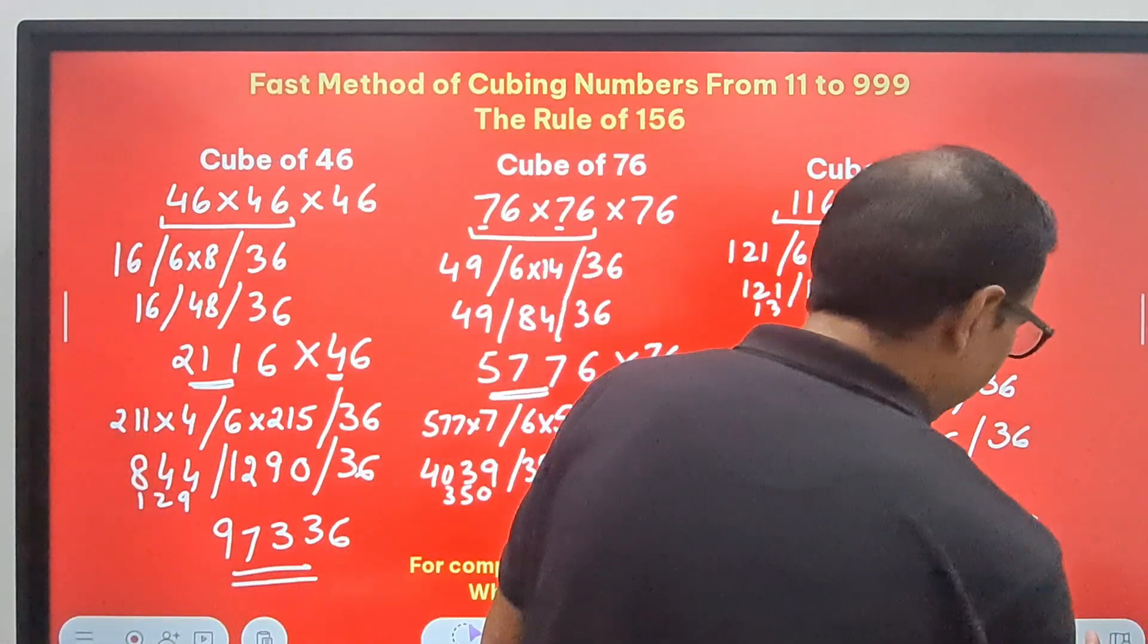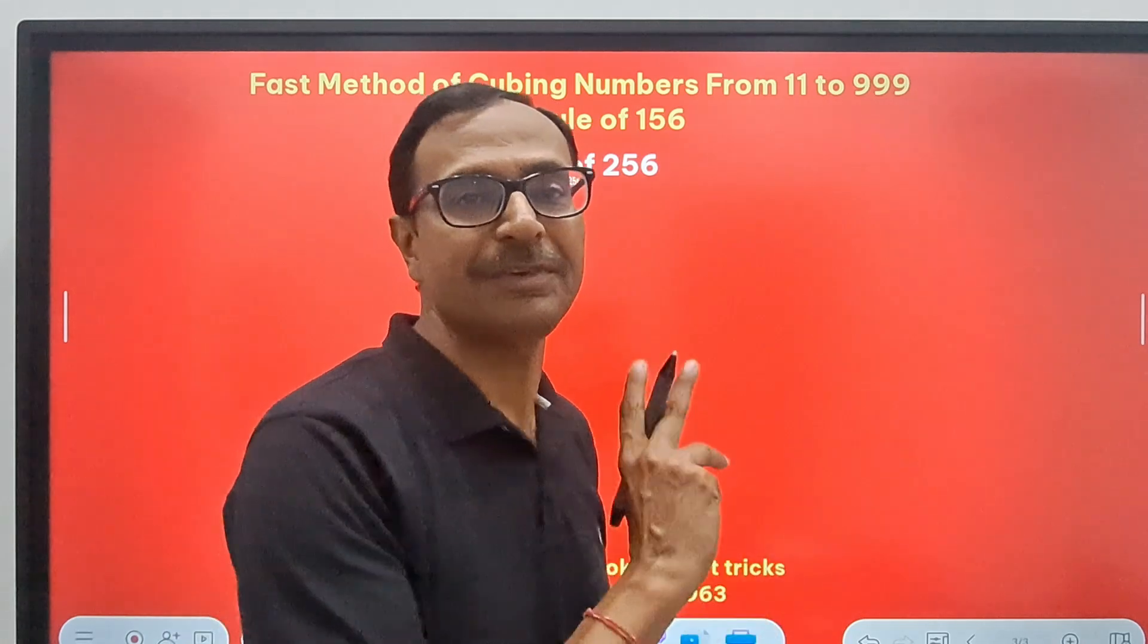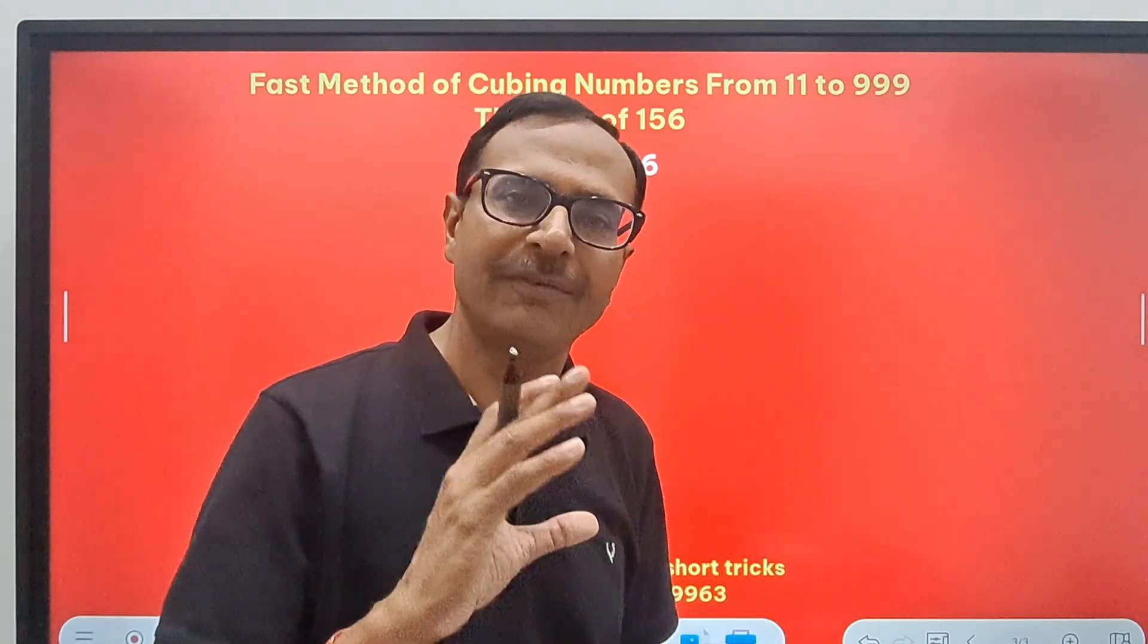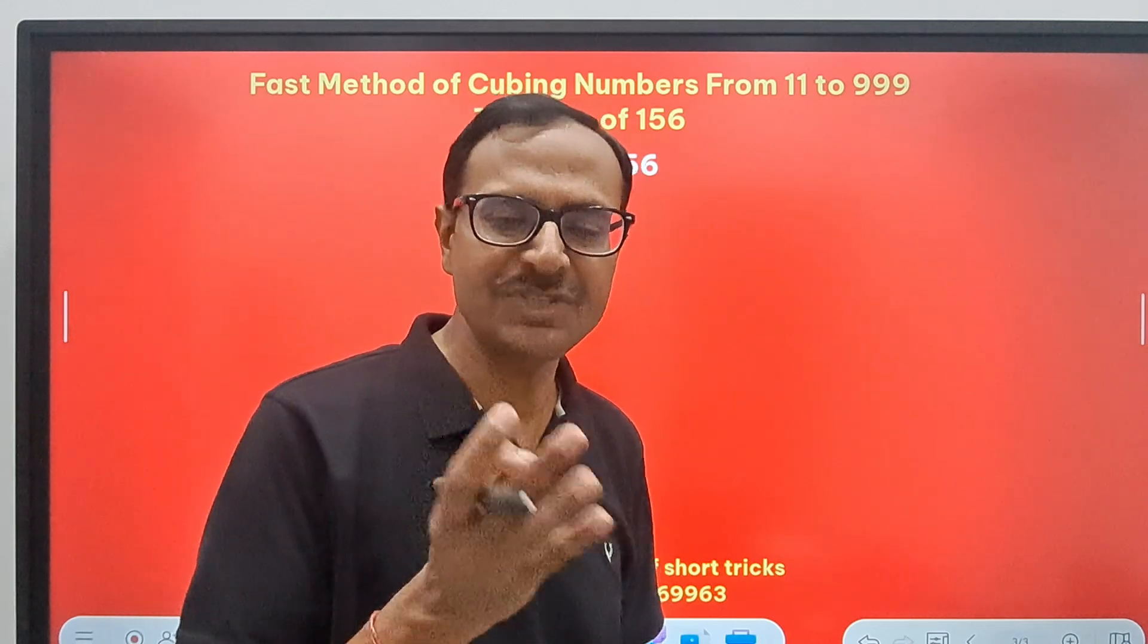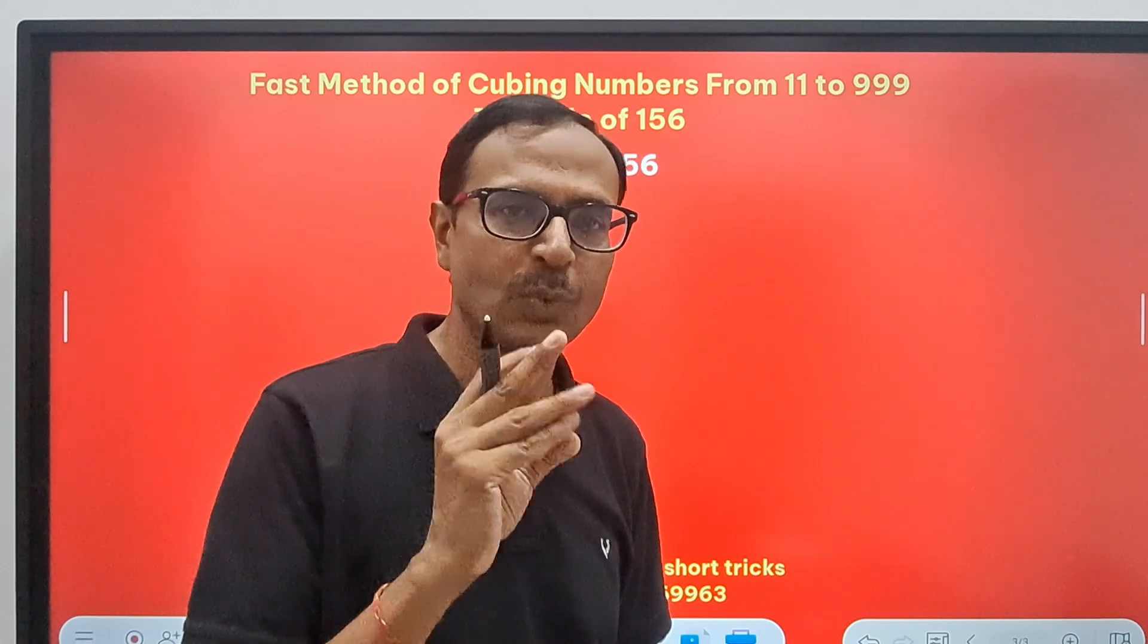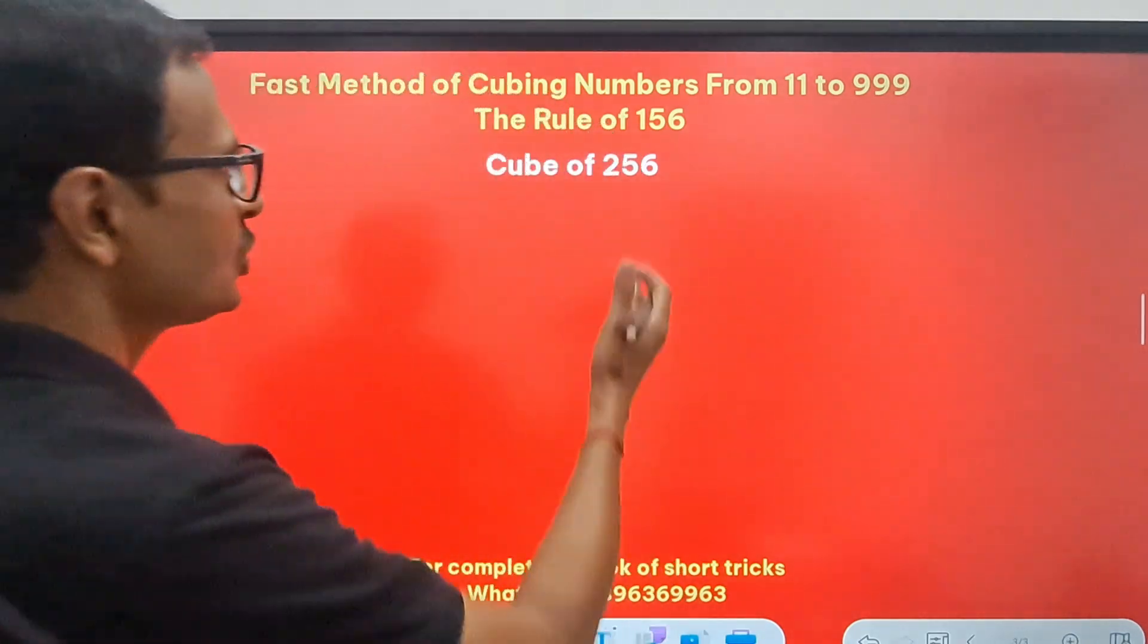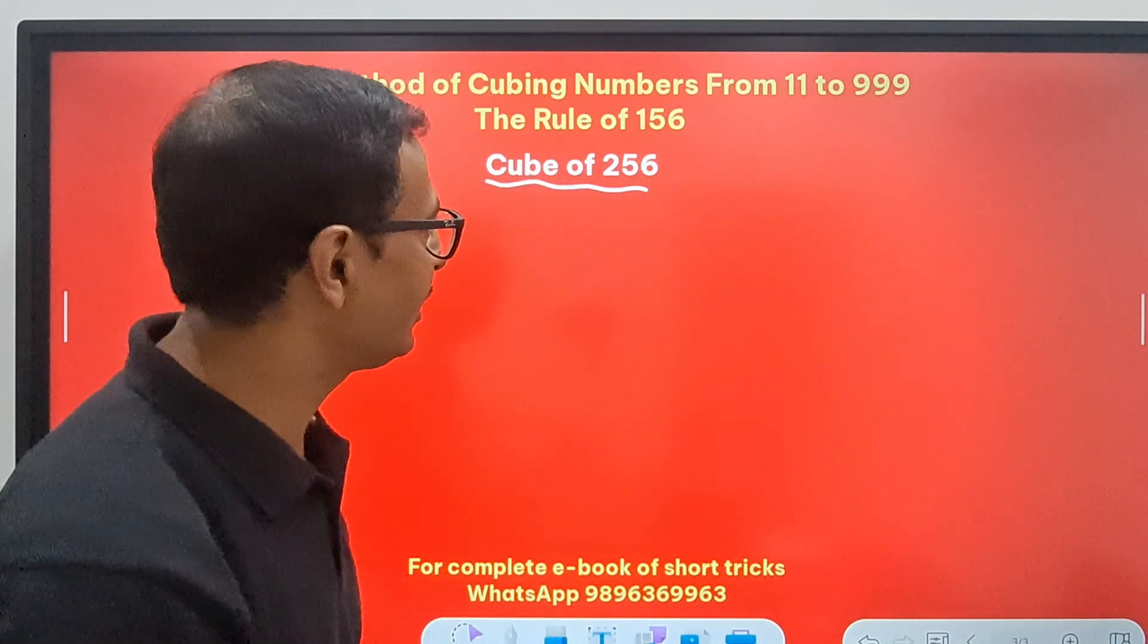So you can go on and on and take up big numbers and challenge yourself. I am sure the rule of 156 is going to get the cubes of all the numbers from 11 to 999 which are ending in 1, 5, 6. That is why 1, 5, 6. Rule of 1, 5, 6. Let's take one more and then we will conclude this. Can we challenge ourselves and find the cube of 256?